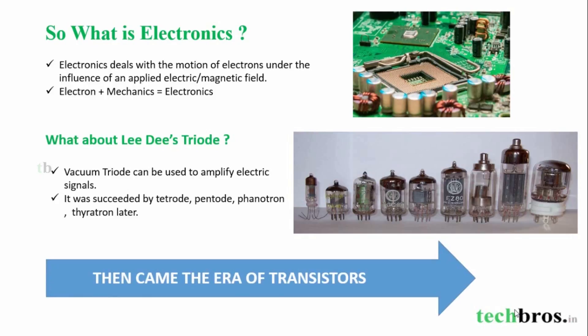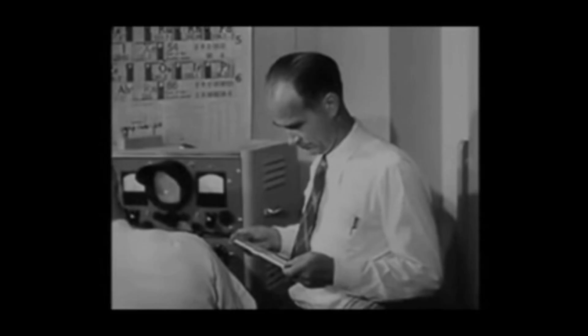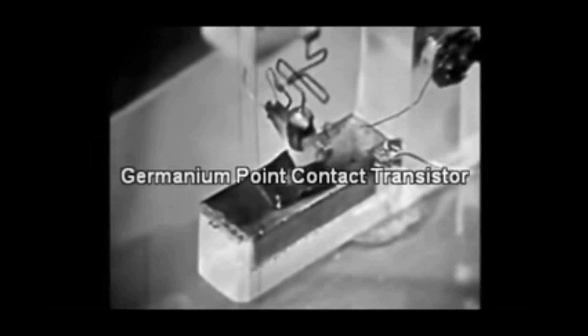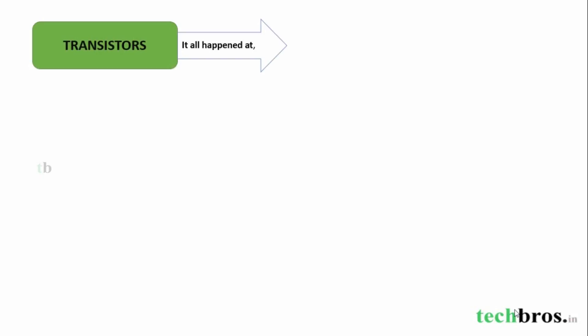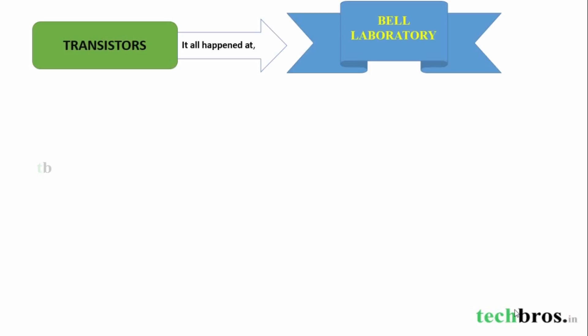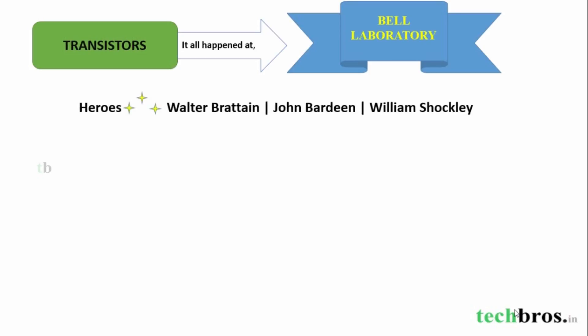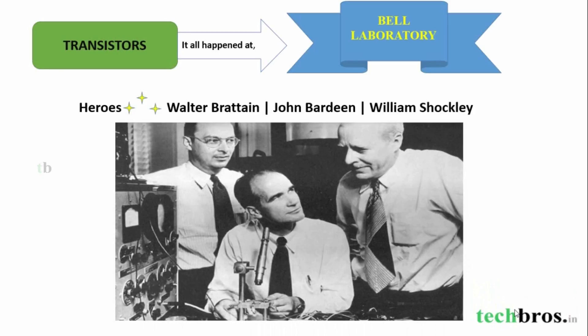Then came the era of transistors. A group of scientists in the laboratory of a telephone company was researching in a field of metals called semiconductors, and they wanted to find out what greater scientific value these metals might have. A transistor is a three-terminal semiconductor device used to amplify or switch electronic signals. Transistors were discovered in Bell Laboratories by Walter Brattain, John Bardeen, and William Shockley.